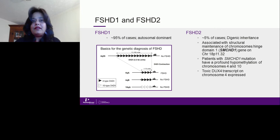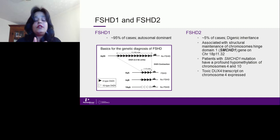This is compounded by the same D4Z4 repeat array on chromosome 10q, which has approximately 99% homology with 4q. It therefore becomes really important to be able to discern the 4q and 10q D4Z4 clusters. With repeat contraction, the chromatin opens, leading to polyadenylation and expression of the DUX4 protein in muscle, which leads to muscular dystrophy.